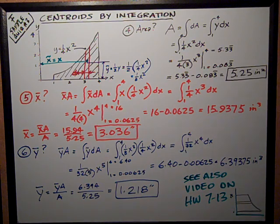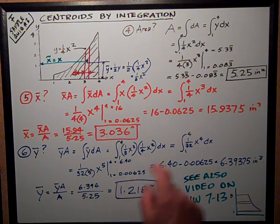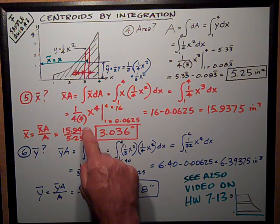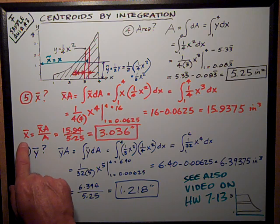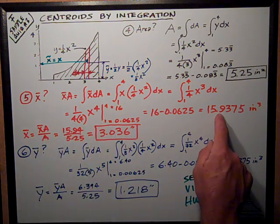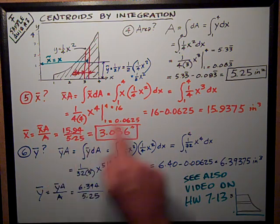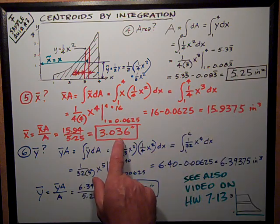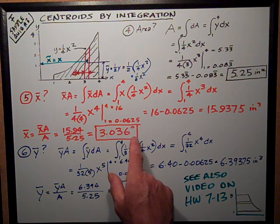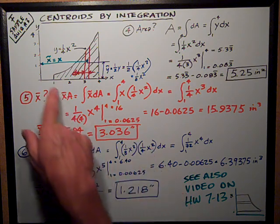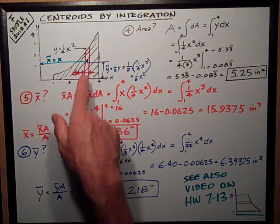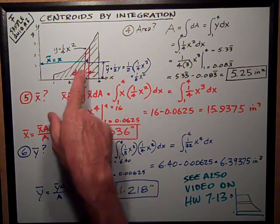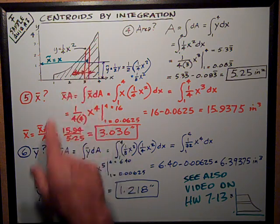Remember, we're always going to keep track of our dimensions, because that helps us keep track of whether or not we've got the right kind of formulas and values going. Here I've got x cubed divided by x squared, and I have an inches. X-bar equals x-bar A, this value, divided by area, this value up here, and it's 3.036 or 3.04 inches. We look at the shape, we see that its area should be shifted over there to the right, and something to the right of 3 looks pretty good to me.